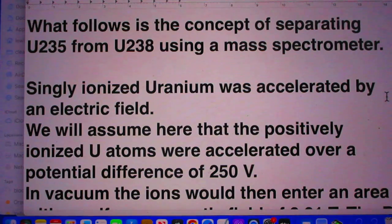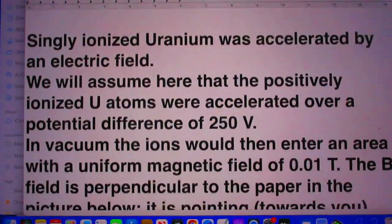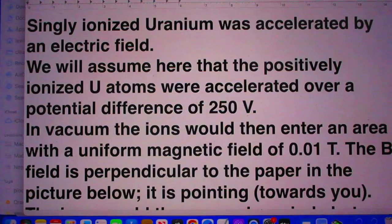What follows is the concept of separating 235 from 238 using a mass spectrometer. Singularly ionized uranium was accelerated by an electric field. We will assume here that the positively ionized uranium atoms were accelerated over a potential difference of 250 volts.